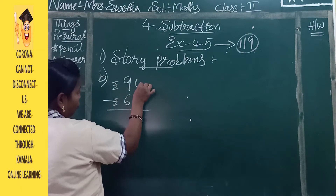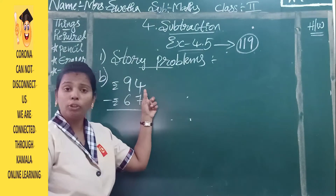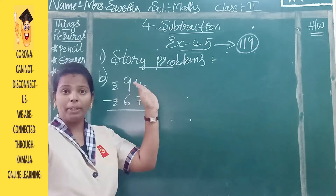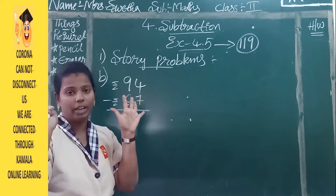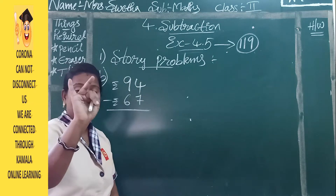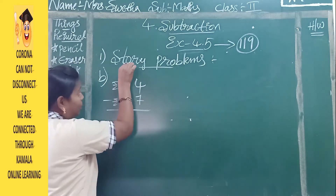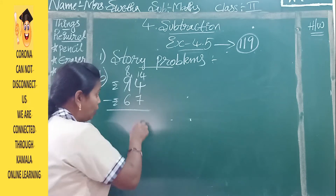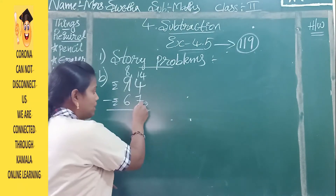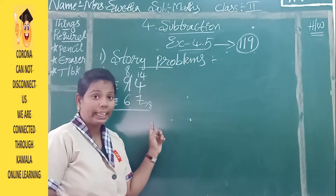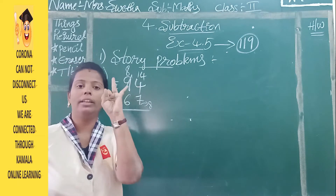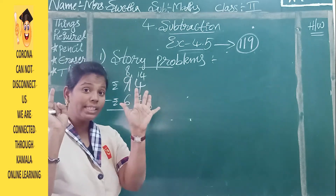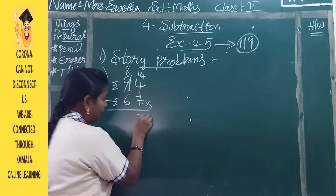Here in the ones place, 4 minus 7. The top number is smaller, so we take a borrow from the tens place. The 9 becomes 8, and 4 becomes 14. Now count: after 7 is 8. Start counting at 8 and stop at 14 — eight, nine, ten, eleven, twelve, thirteen, fourteen — that is 7 fingers. So 14 minus 7 is 7.